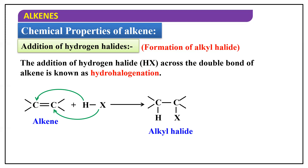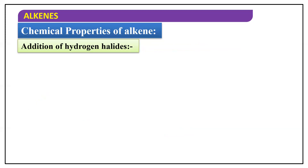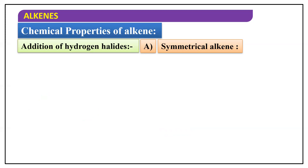All three reactions studied so far are quite similar. In addition of hydrogen, one H adds to each carbon of the double bond. In halogenation, both halogens attach to the respective carbons. In hydrohalogenation, hydrogen adds to one carbon and halogen adds to the other carbon of the double bond, giving an alkyl halide.